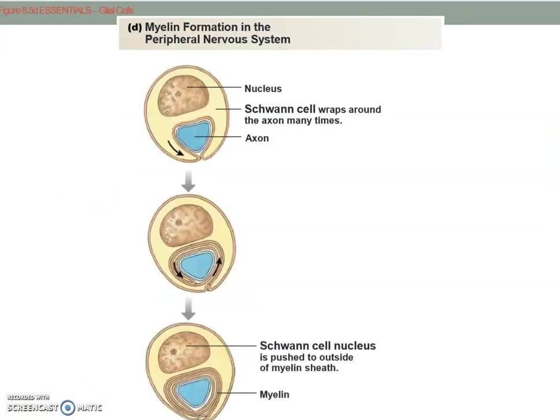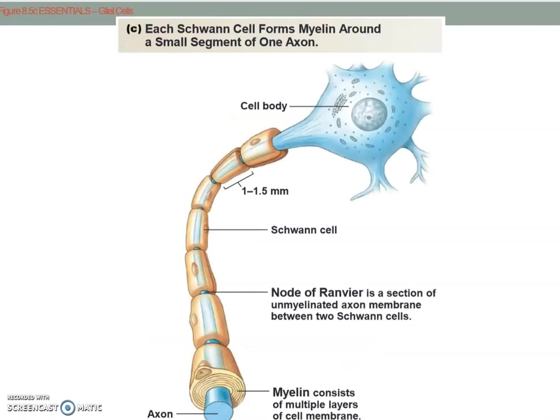This slide shows how Schwann cells wrap themselves in multiple layers around an axon, thereby forming myelin insulation. The cell wraps itself in layers and layers of phospholipid bilayer surrounding the axon — multiple layers forming a myelin installation. The spaces between each myelin installation are called nodes of Ranvier. These are bare spots with no myelin insulation, and the action potential will be propagated from node of Ranvier to node of Ranvier.